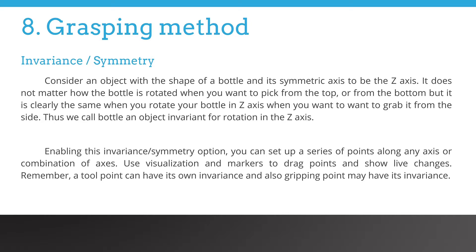Consider an object with the shape of a bottle and its symmetric axis to be the z-axis. It does not matter how the bottle is rotated when you want to pick from the top or bottom. But it is clearly the same when you rotate your bottle in the z-axis or when you want to grab it from the side. Thus, we call bottle an object invariant for rotation in the z-axis.